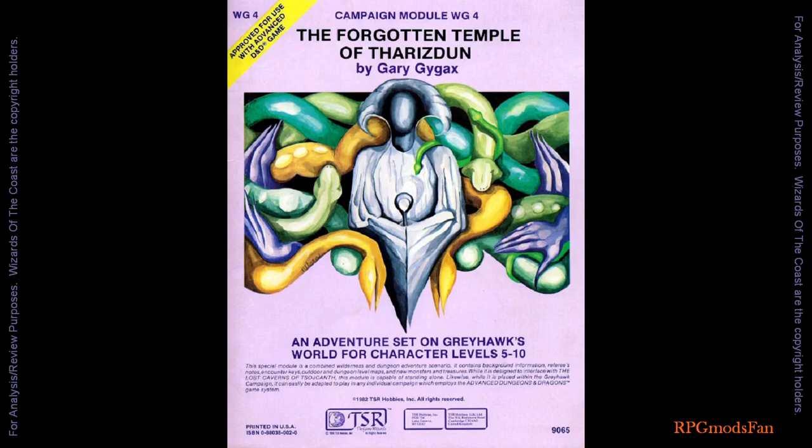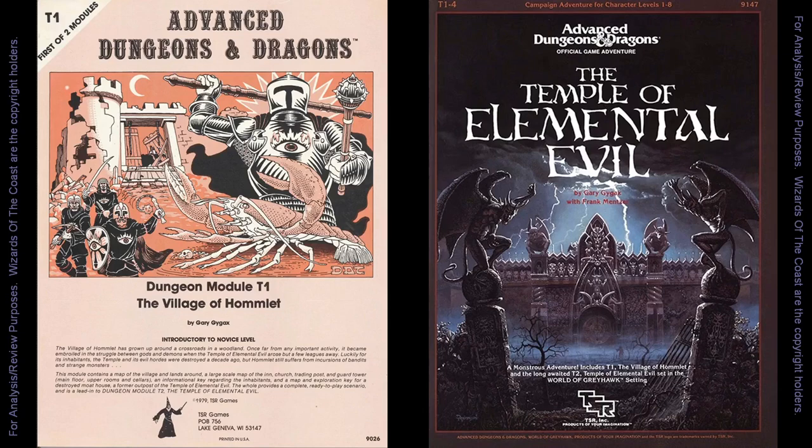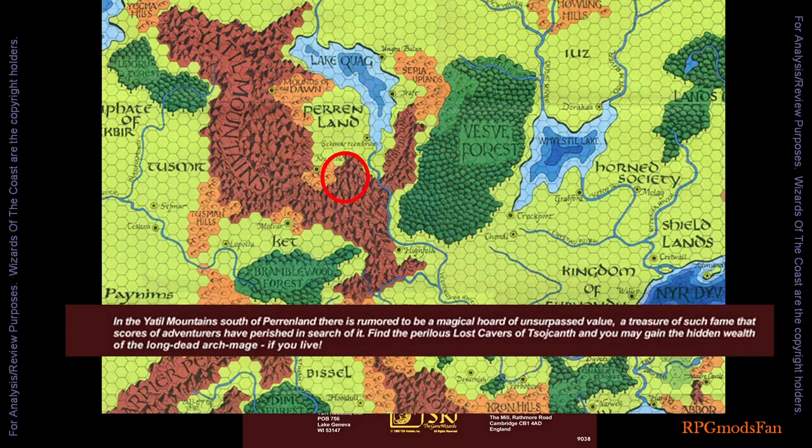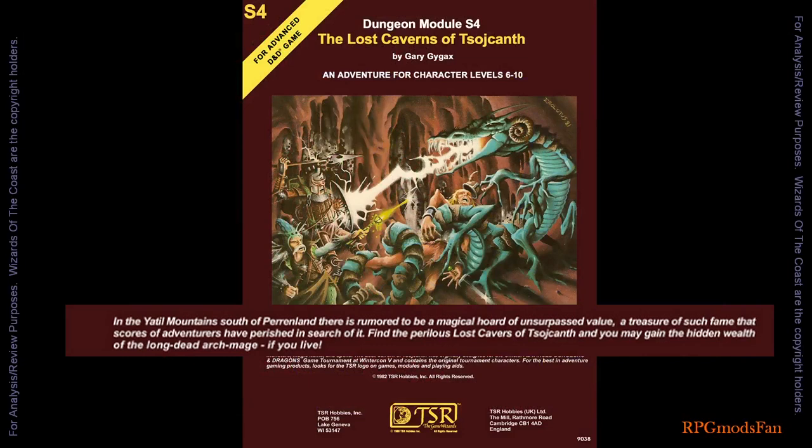Homelet and the Temple of Elemental Evil became their own things. The module's cover describes the adventure contained within as follows: In the Yetil Mountains south of Perinland there is rumoured to be a magical horde of unsurpassed value, a treasure of such fame that scores of adventurers have perished in search of it.